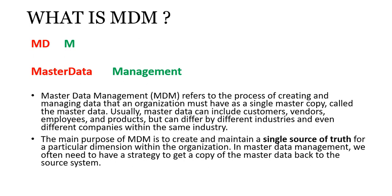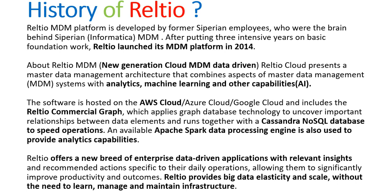A single version of truth for a particular dimension within an organization. In master data management, we need to have a strategy to create a copy of the master data and define how the data needs to be backed up or synced with the source system. When data comes from the source, we identify the master core, do the management, and after creating a single version of truth, the master data goes back to the source system — completing the full circle.